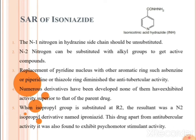When an isopropyl group is substituted at N2, the resultant isopropyl derivative is called eproniazide. This drug, apart from anti-tubercular activity, also exhibits psychomotor stimulant activity. So eproniazide — the isopropyl derivative of isoniazide — has both anti-tubercular and psychomotor stimulant activities.